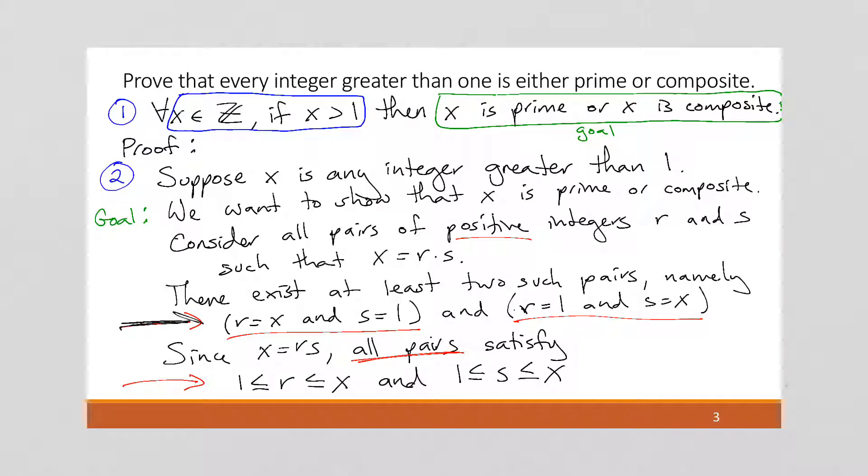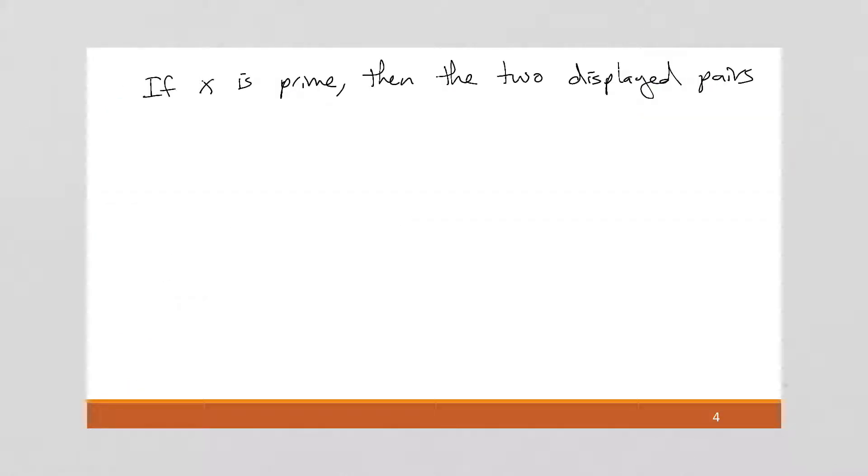So we're going to go on to the next page. If X is prime, then the two displayed pairs, right, the R is equal to X and S is equal to 1, and the R is equal to 1 and S is equal to X, at least those, or I guess the two displayed pairs, the two displayed pairs are the only way to write X as R times S. And that's, again, if X is prime.